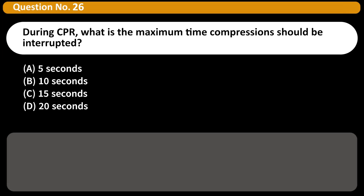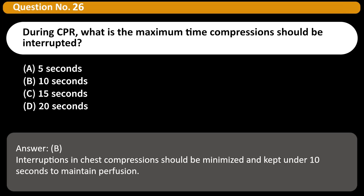During CPR, what is the maximum time compressions should be interrupted? A. 5 seconds. B. 10 seconds. C. 15 seconds. D. 20 seconds. Answer: B. Interruptions in chest compressions should be minimized and kept under 10 seconds to maintain perfusion.